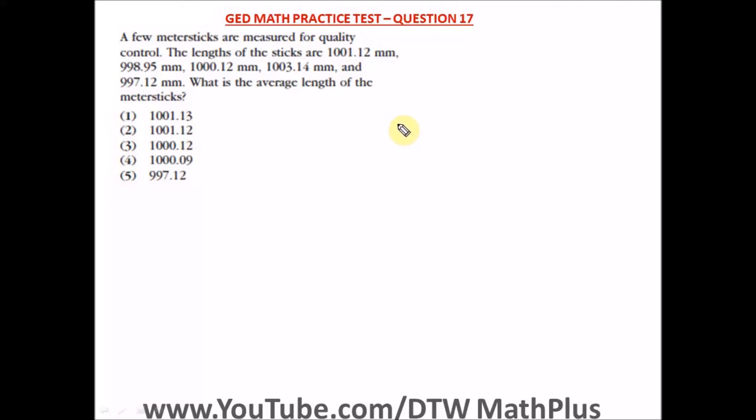Question 17 of the GED math practice test part 1 starts with calculator. It says a few meter sticks are measured for quality control.